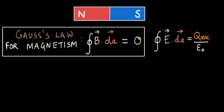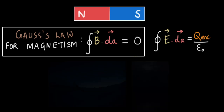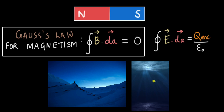Scientists have been searching for a magnetic monopole for almost 90 years — they've been to the north pole and deep underwater — but haven't been able to find one. If they do find one, the right-hand side of Gauss's law for magnetism would change and it would look very similar to Gauss's law for electricity, with something like a magnetic charge appearing. The entire set of Maxwell's equations would then become beautifully symmetric. We will talk about Maxwell's equations in depth in our coming videos.